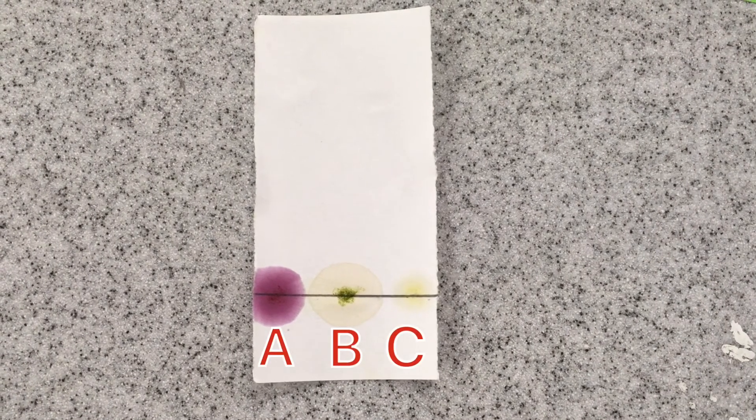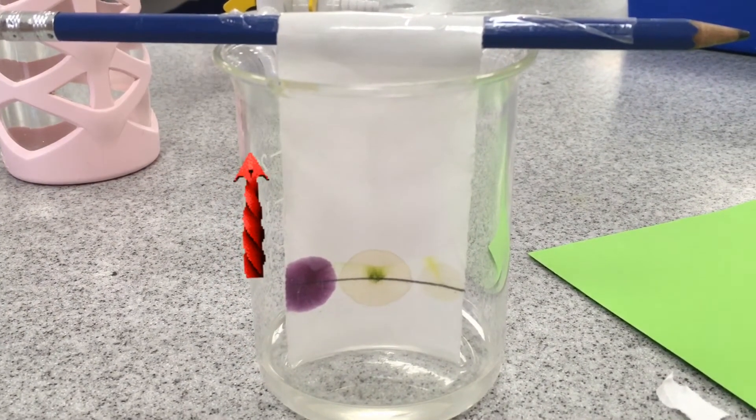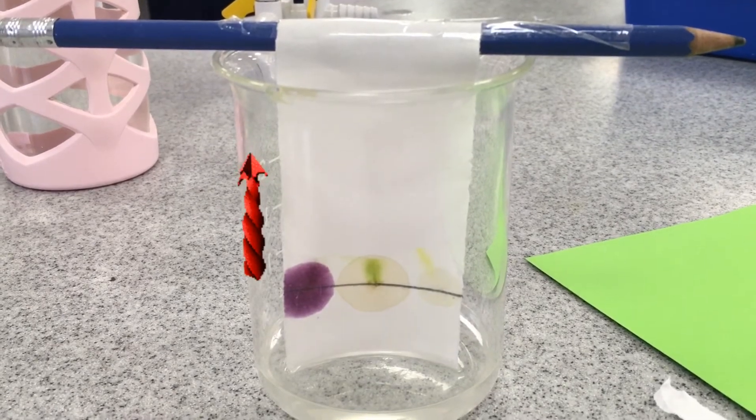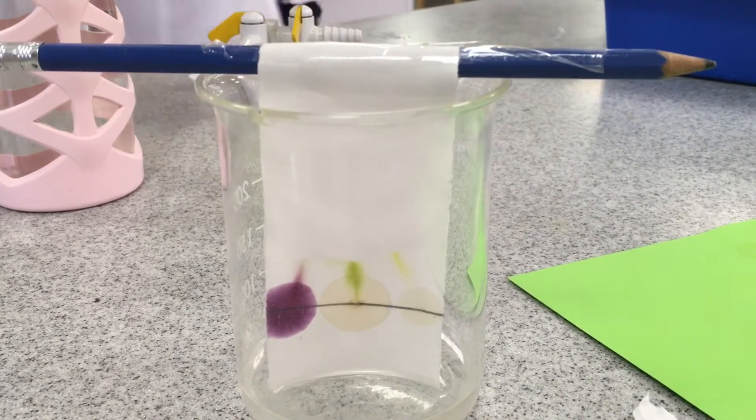Once dry, we will label the three substances A, B, and C. Then we will place the chromatography paper approximately on the surface of the propanone, which is 50 centimeters cubed. The solvent will travel up the paper carrying the pigment with it.